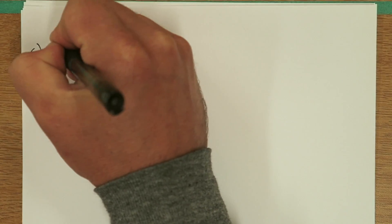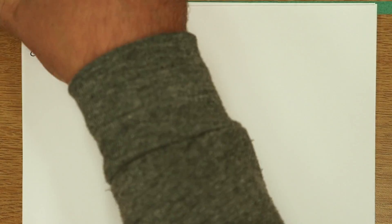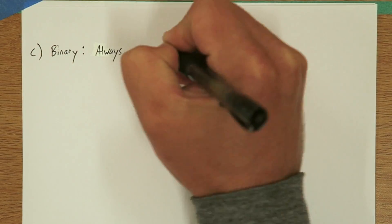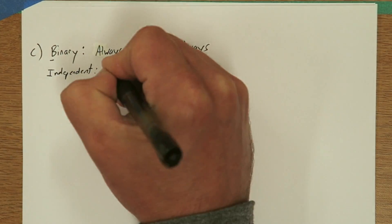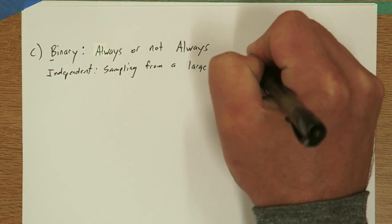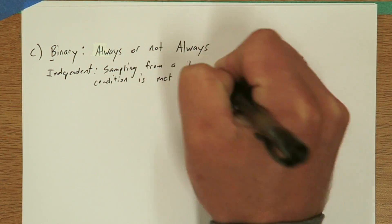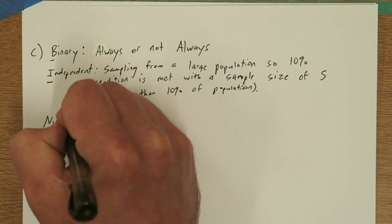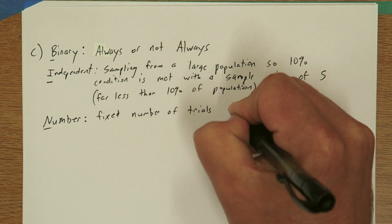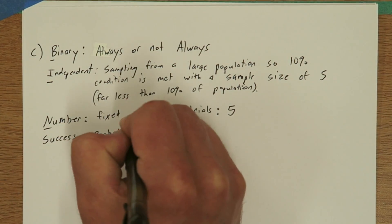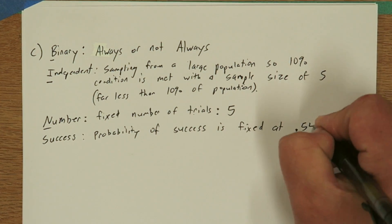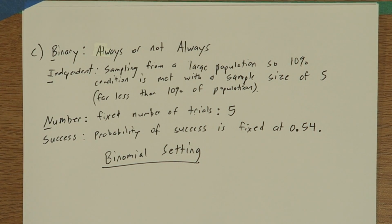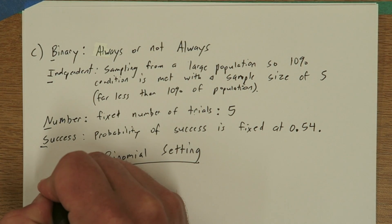To answer part C, we first need to notice it follows a binomial setting. The acronym BINS is sometimes helpful for checking these conditions. First, it's binary. The response can either be always or not always. Independent. Since we're sampling from a large population and sampling only five people without replacement, it's safe to assume they're less than 10% of the population. So the 10% condition's met, and we can consider these trials independent. There has to be a fixed number of trials, and it says we're looking at five people. Finally, the probability of success has to be the same for each trial, and it is, .54. So this does follow the binomial setting.